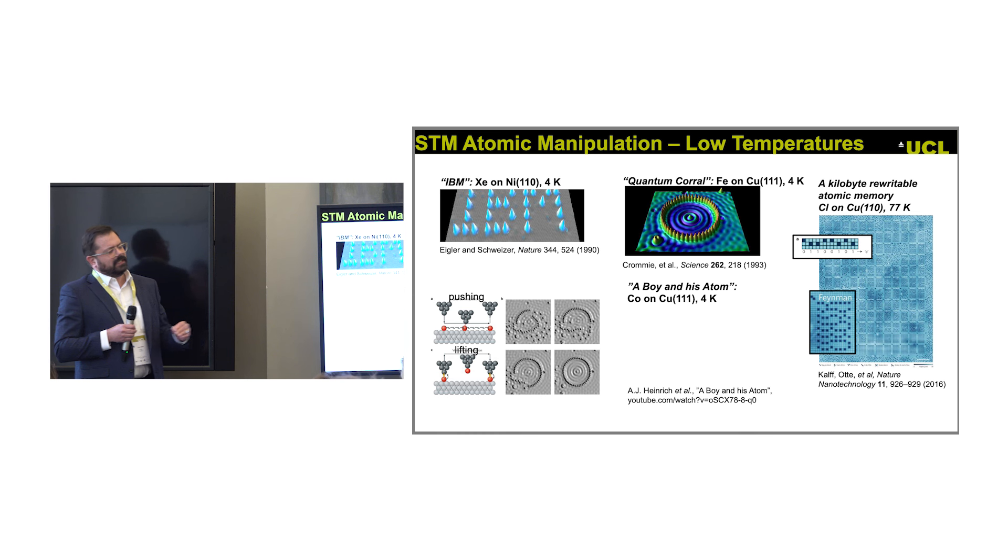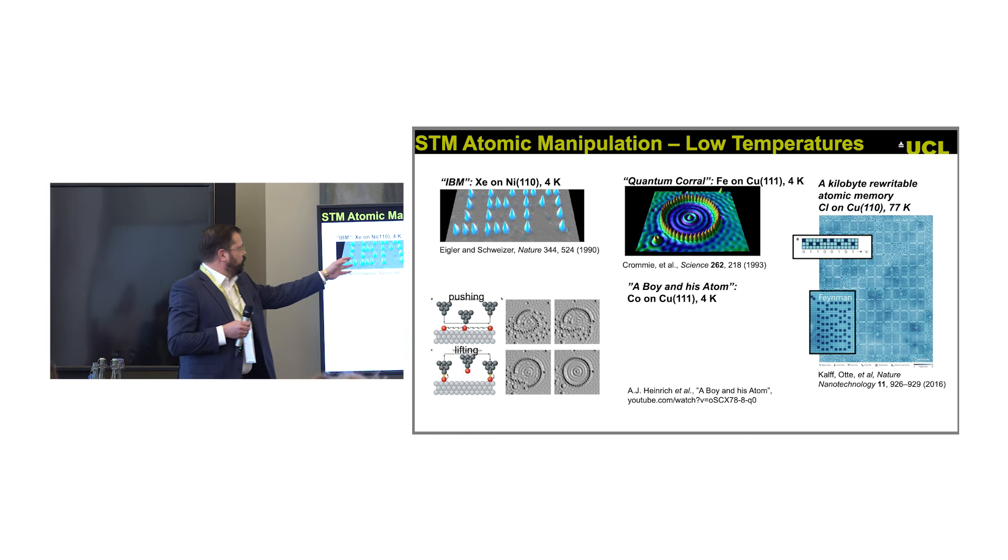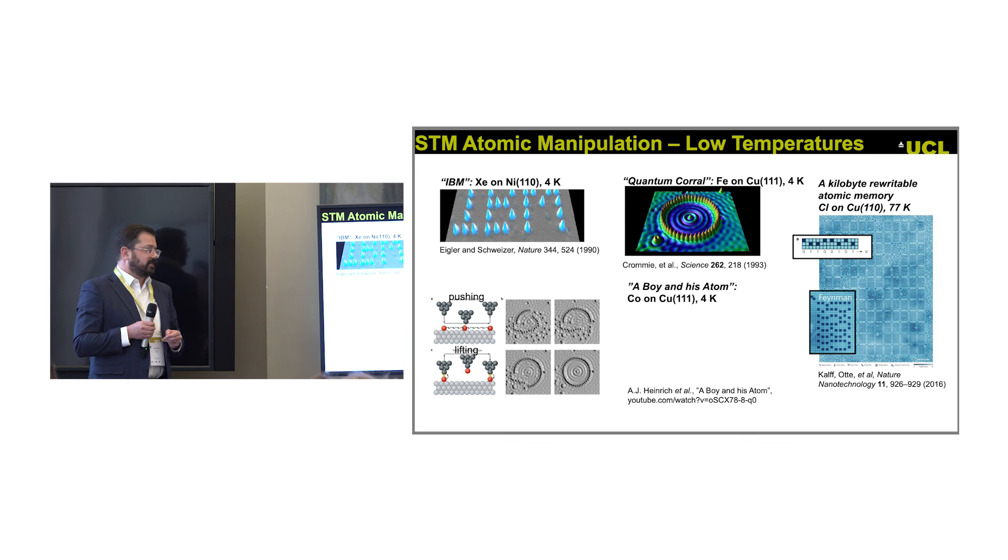In the early days they realized you could not only measure it, but also manipulate the surface. Here are some famous examples: xenon atoms on a nickel surface spelling out IBM from 1990. Here they build a famous quantum corral where you can see electronic wave functions trapped in a ring of individually positioned iron atoms on the copper surface.